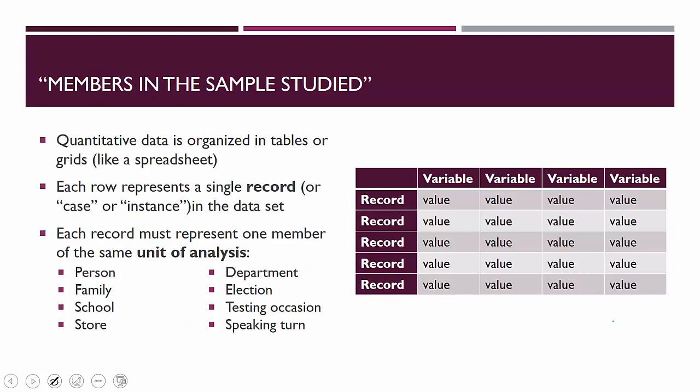Starting with members in the sample studied: quantitative data tends to be organized in tables or grids, kind of like spreadsheets. Each row represents a single record, sometimes referred to as cases or instances in the data set. So if you're studying people, then each row is a person. If you're studying families, then each row is a family. Each record must represent one member of the same unit of analysis.